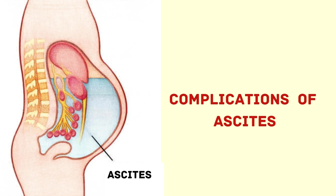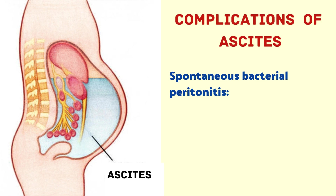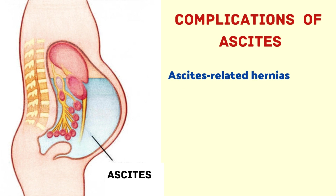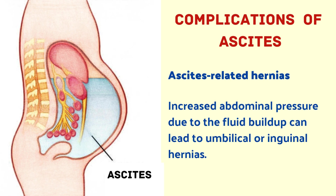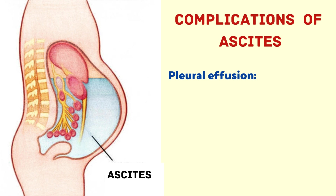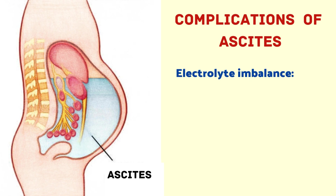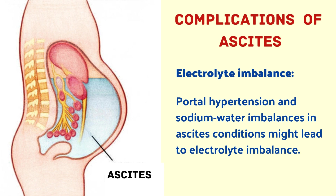Now let us discuss the complications of ascites. The first complication is spontaneous bacterial peritonitis (SBP) — a serious, life-threatening bacterial infection of the ascitic fluid, characterized by fever and stomach pain. The next complication is ascites-related hernias — increased abdominal pressure due to fluid buildup can lead to umbilical or inguinal hernias. The next complication is pleural effusion, where ascites can cause fluid to accumulate between the lungs and chest cavity.